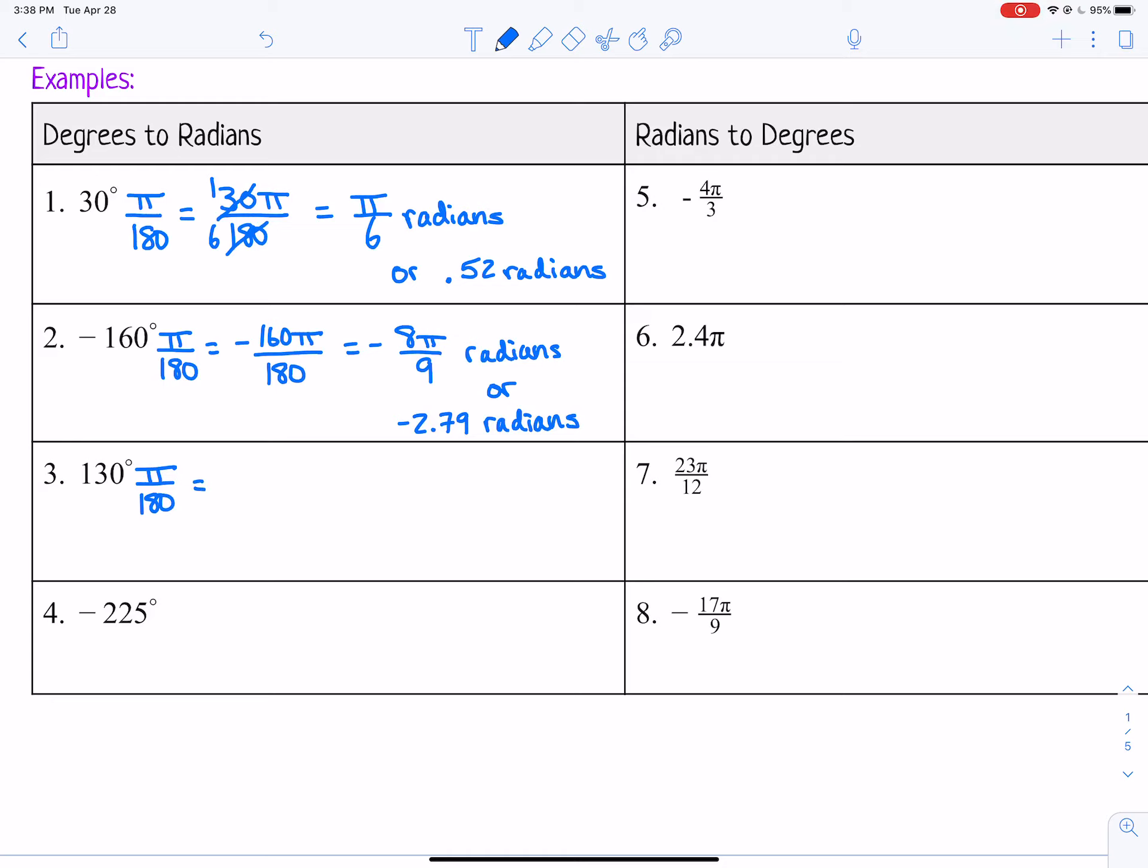Let's do the next one. We're going to multiply 130 degrees by pi over 180. So that gives us 130 pi over 180. We could just divide those by 10 and say that that's 13 pi over 18, or you could get a decimal and round it off.